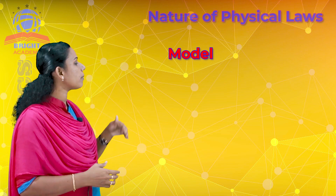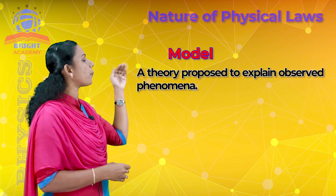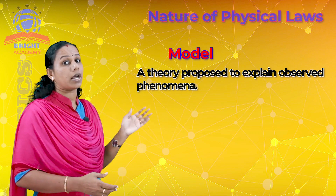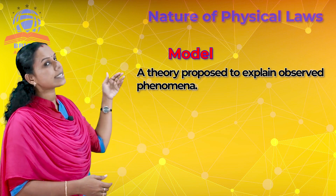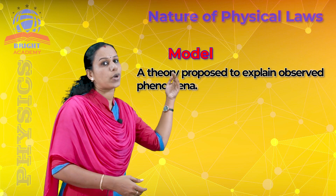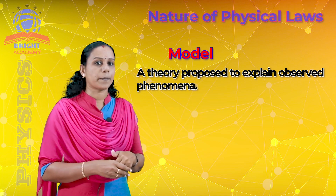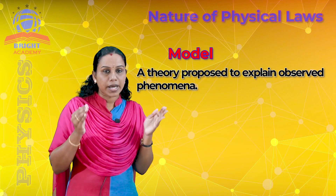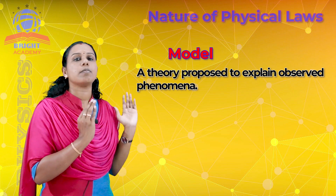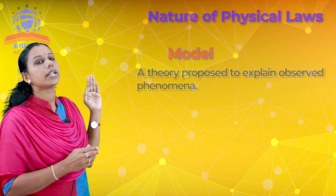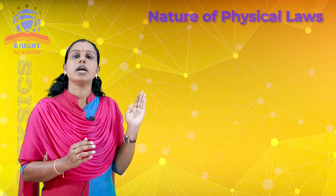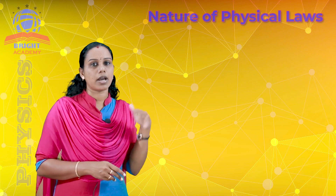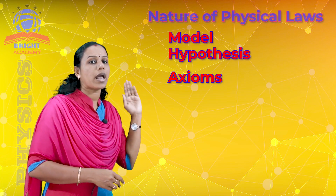Model means a theory which is proposed to explain the observed phenomenon. When we observe a phenomenon, we explain it using a theory and a model. So hypothesis, axiom, and model are the three things in the developing stages of a physical law.